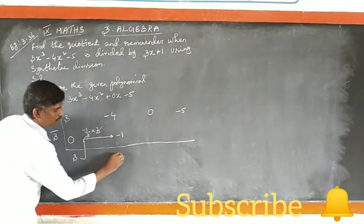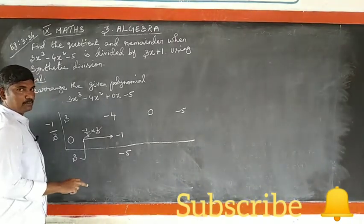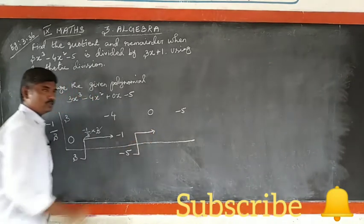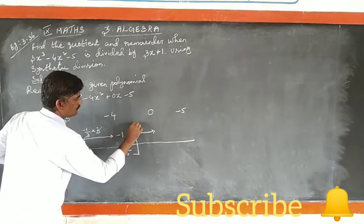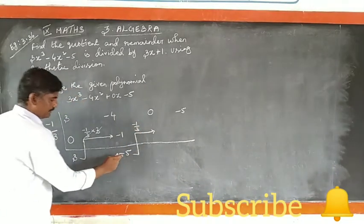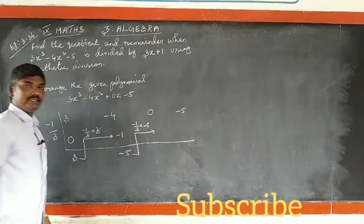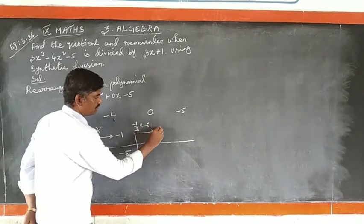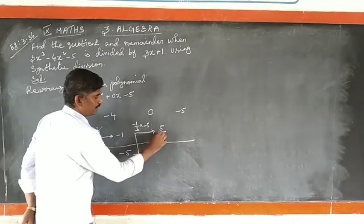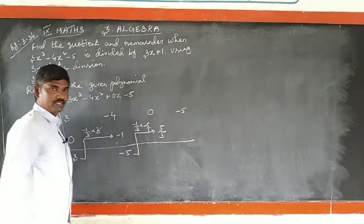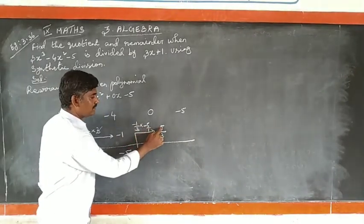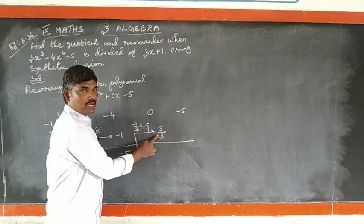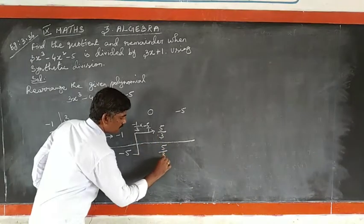If we add, we get minus 5. Same thing, we add 5. Then minus 1 by 3 into minus 5: minus 5 into minus 5 — 15 is 5, 1 times 3 is 3 — giving 5 by 3. And 0 plus 5 by 3 gives 5 by 3.